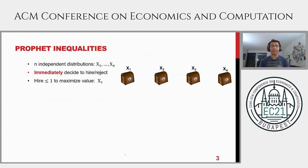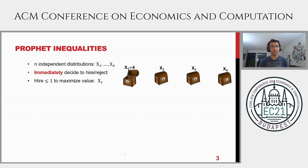To make it more concrete, let's look at the classical prophet inequality problem. There are n random variables X1 to Xn whose distributions you know, but not their exact values. Think of these as n boxes or n candidates. You can find out a candidate's value by interviewing them. You interview candidates one by one sequentially — as soon as you finish an interview, you see their value, and you must immediately decide whether to hire them or not. You can hire at most one candidate.